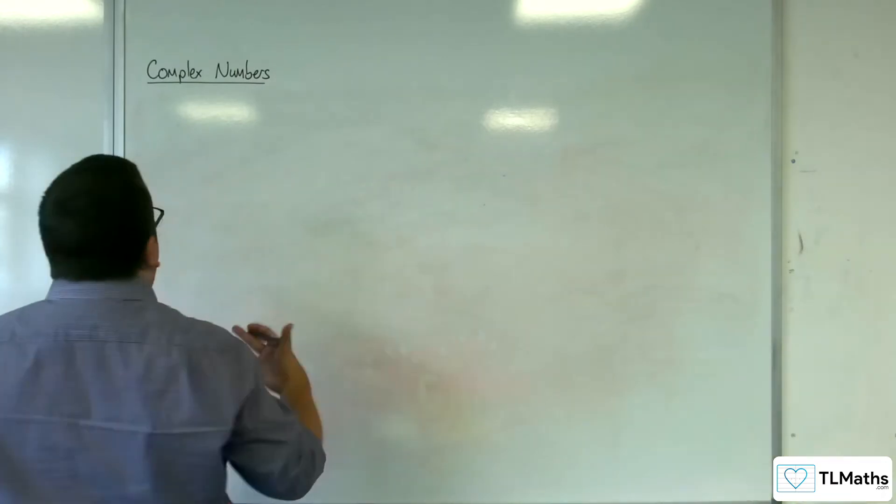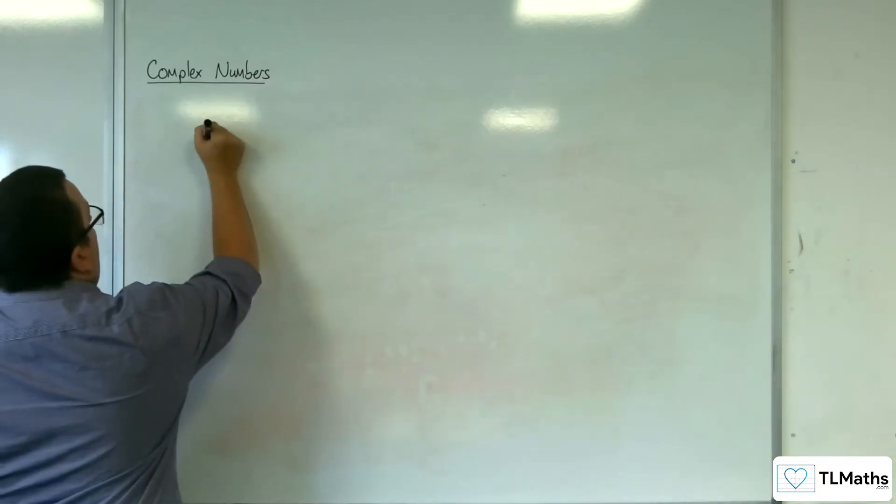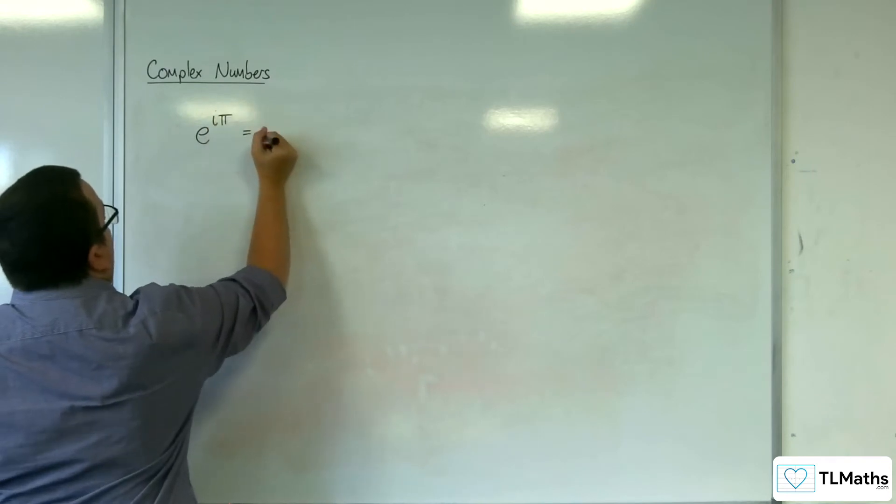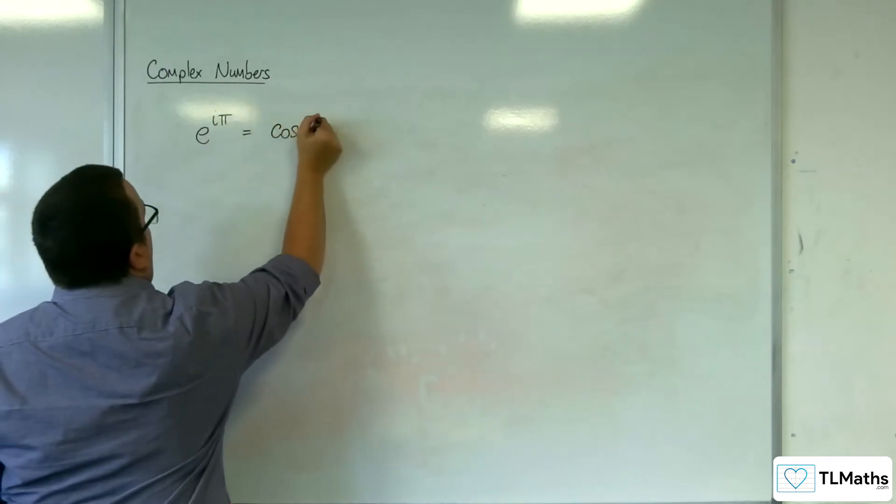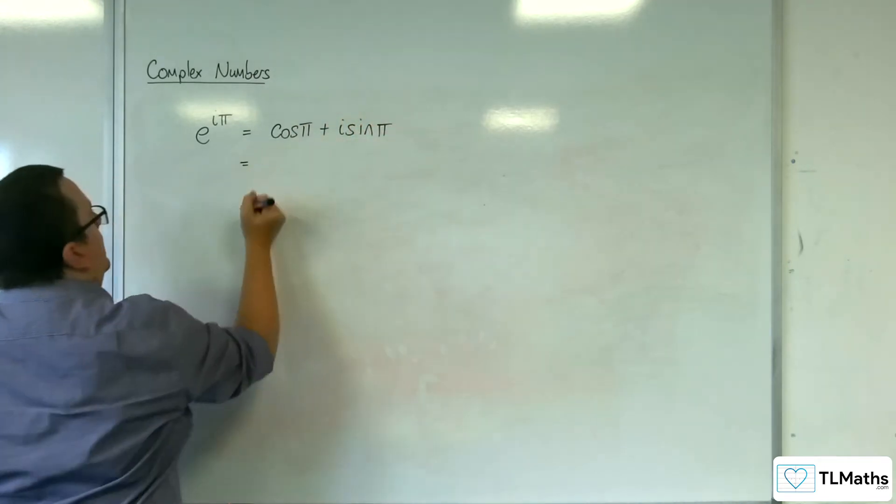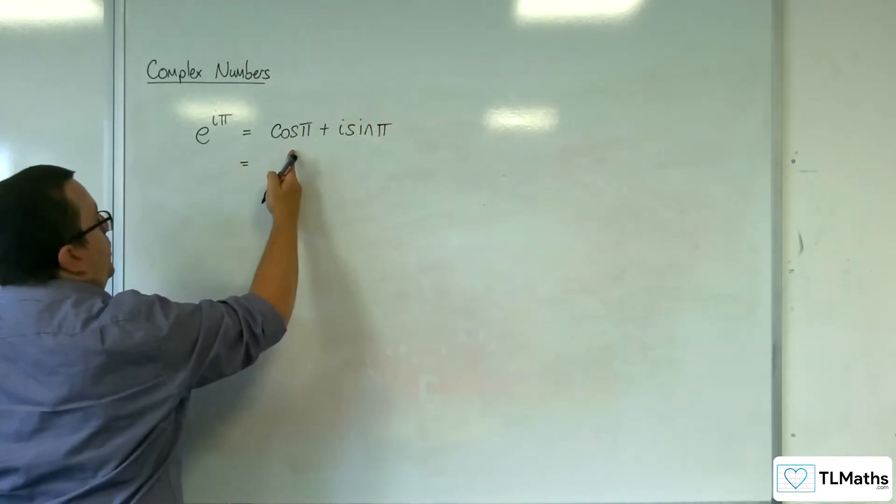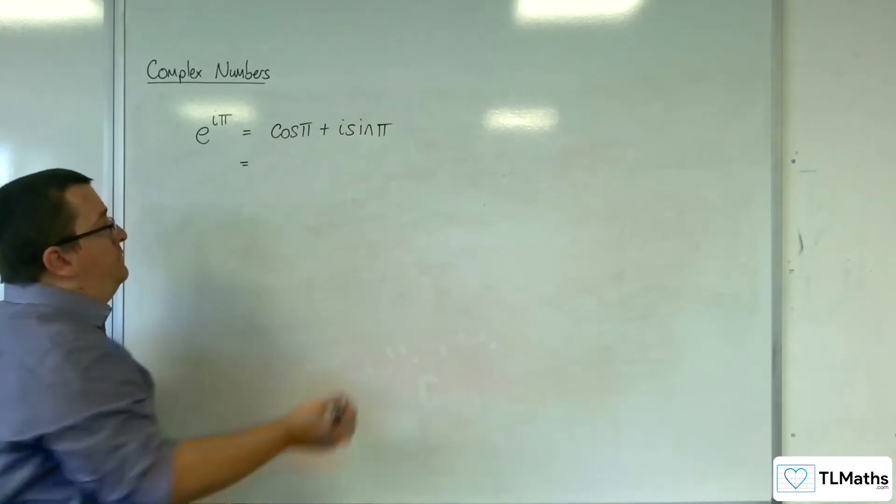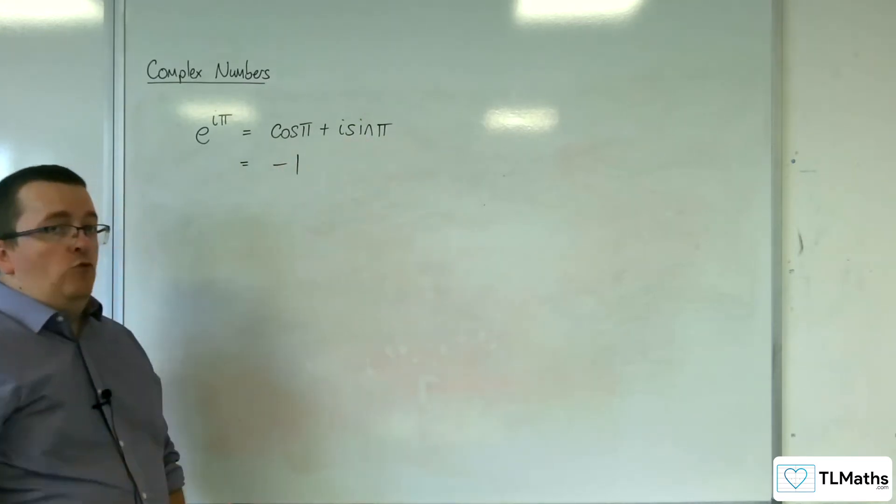Now, if you replace the theta with pi and you have e to the iπ, then that is cos(π) + i·sin(π). Now, cos(π) we know is -1 and sin(π) is 0.